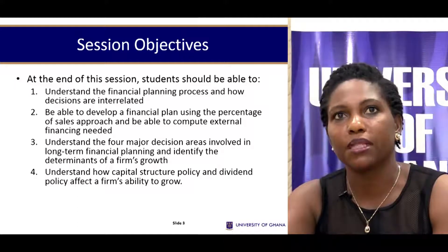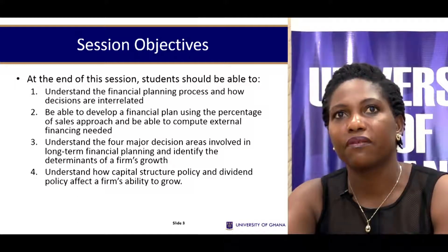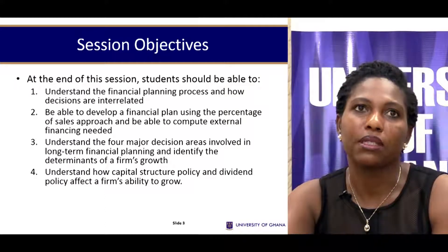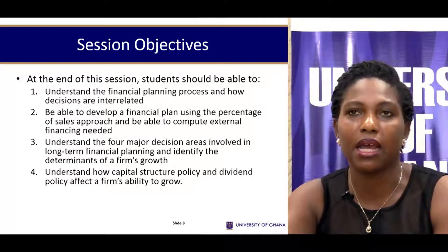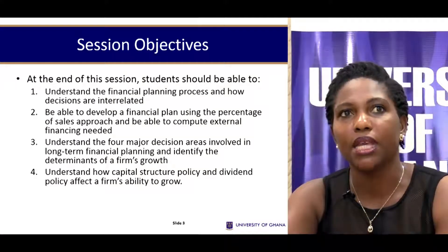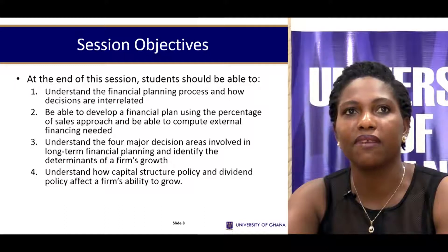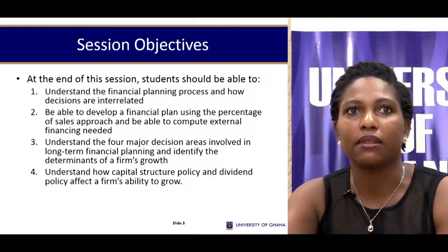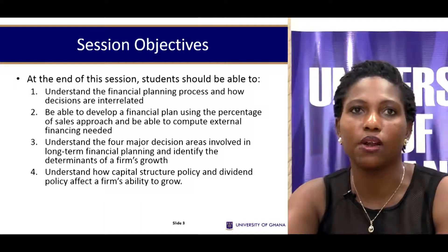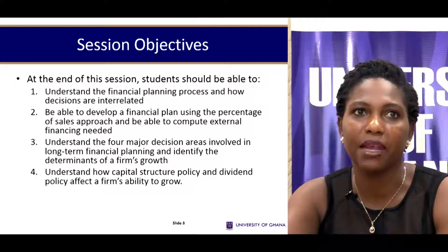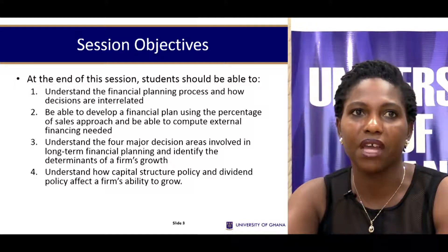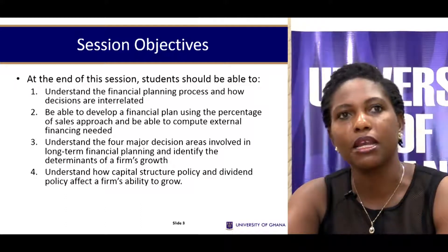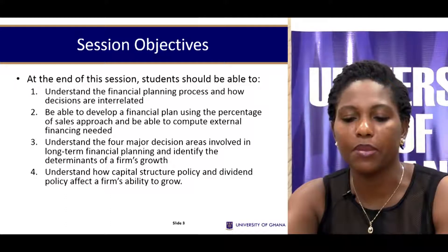By the end of this session, we're expecting students to be able to outline the financial planning process and how the decisions are interrelated, be able to develop a simple financial plan using the percentage of sales approach, and be able to compute the external financing that a firm may need in its quest to grow. Also, understand the four major decision areas involved in long-term financial planning, identify the drivers of a firm's growth, and understand how capital structure policy and dividend policy may affect a firm's ability to grow.